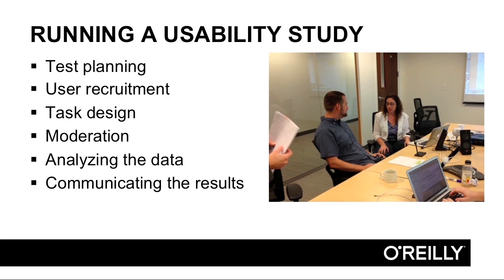Running a usability study involves a few different stages. It starts out with test planning, where you'll write a test plan and run a test planning meeting with your stakeholders to get a better understanding of what they want to learn. Then we find and recruit people who we want to test, we create tasks for users to complete with the product, and then we moderate and facilitate the test sessions. Finally, after we've run all of our sessions, we analyze the data and communicate the results. I'll walk through all of these stages and give you tips and techniques for running these studies, so you can feel confident running your own usability studies.